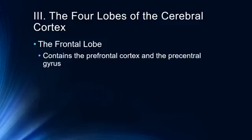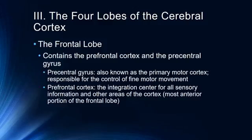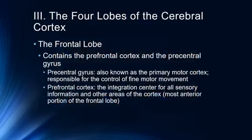The frontal lobe contains the prefrontal cortex and the precentral gyrus. The precentral gyrus, also known as the primary motor cortex, is responsible for the control of fine motor movement. The prefrontal cortex is the integration center for all sensory information and other areas of the cortex — the most anterior portion of the frontal lobe. This is where we serve the command and control of our sensory-motor processes as well as working memory and executive functions.